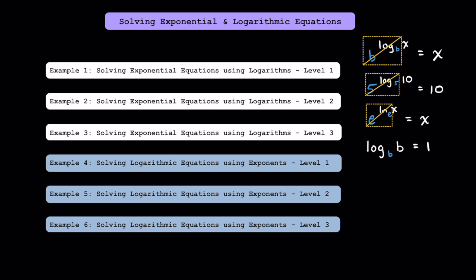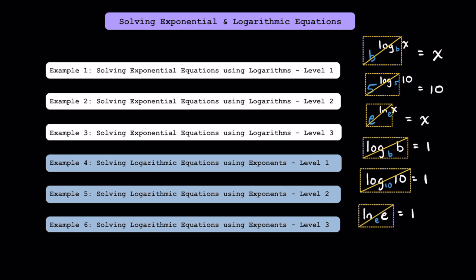Also, if you have log base b of b, that just simplifies down to 1. Keep in mind that when you see a log function but you don't see a base, it's always 10 by default. Log of 10, or log base 10 of 10, is equal to 1. And finally, when you take ln of e, that's also equal to 1 because the base for natural logarithms is e. ln of e, or ln base e of e, is equal to 1.